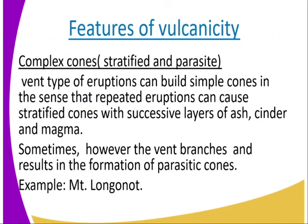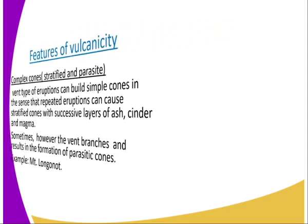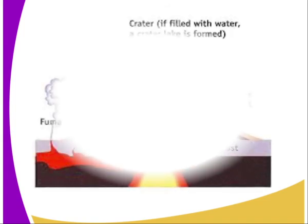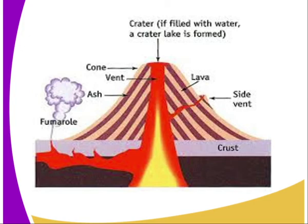We also have complex cones — that is, stratified and parasitic cones. Vent-type eruption can build simple cones, but repeated eruptions can cause stratified cones with successive layers of ash, cinder, and magma. Sometimes the vent branches, resulting in the formation of parasitic cones. An example is Mount Kilimanjaro. You can see the side vents and where the parasitic hills, or parasitic mountains, are.